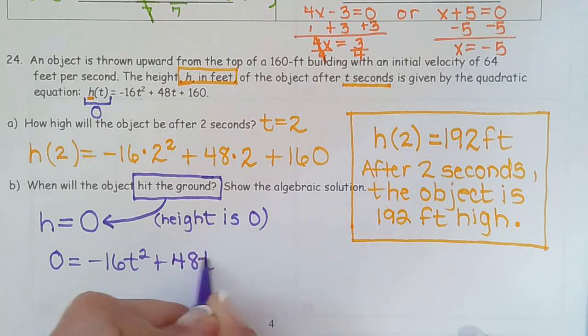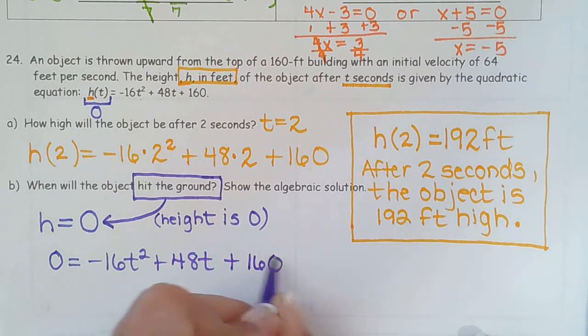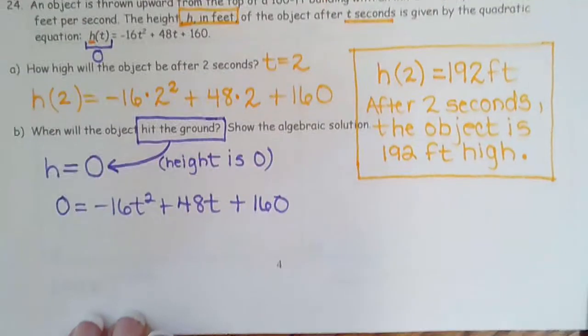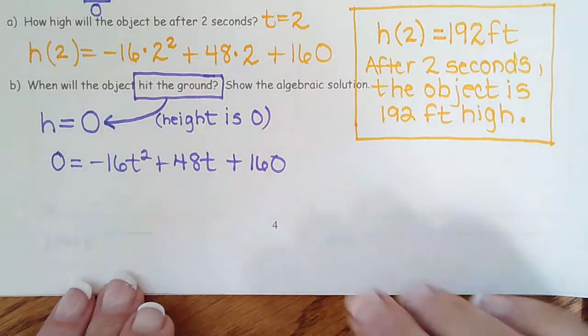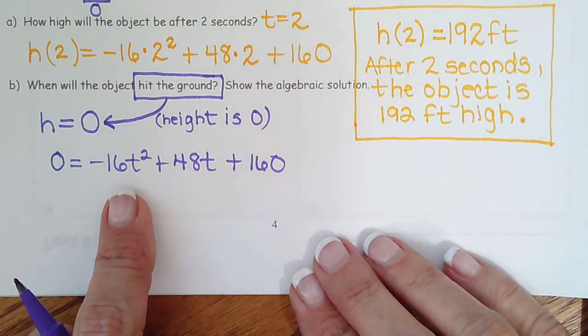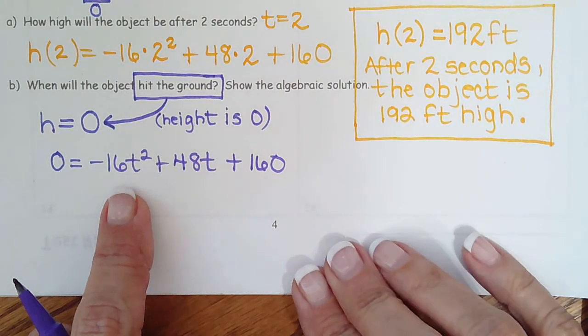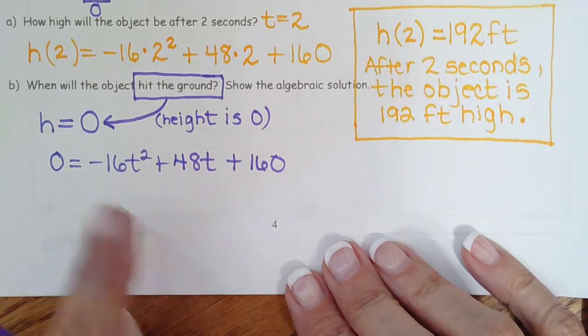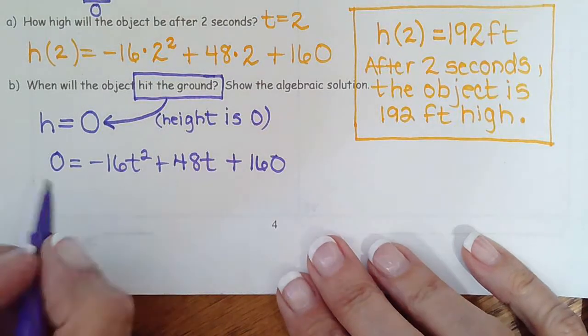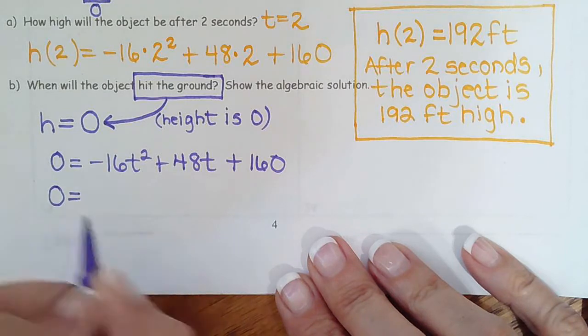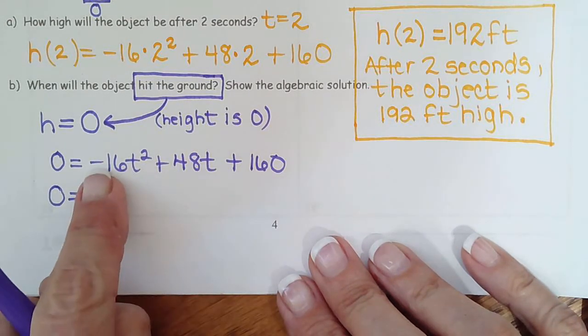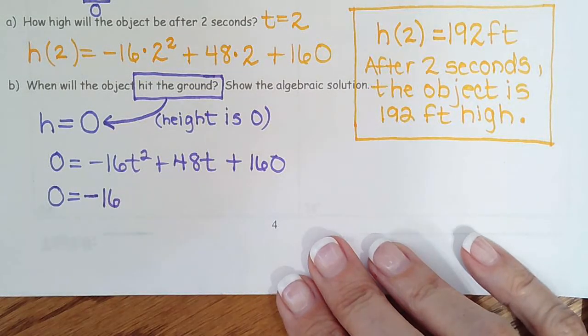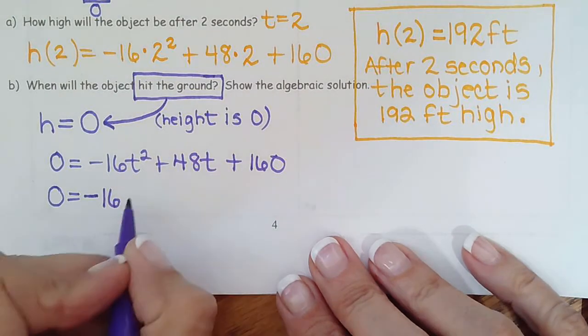And the one thing I have noticed about problems in this chapter is that almost all the word problems have a GCF. So that's the biggest hint I can give you for the test. When you get this word problem, look for a GCF. Don't do AC method with these gigantic numbers. 16 times 3 is 48. 16 times 10 is 160.